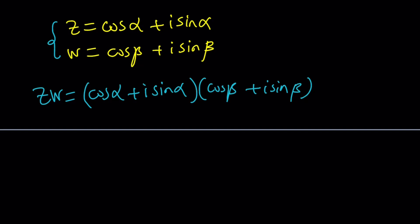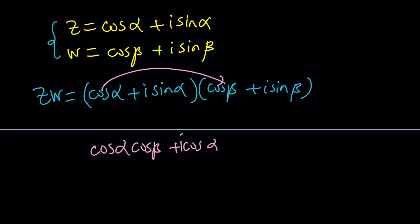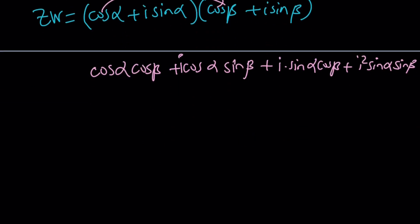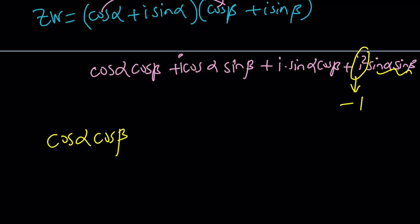So how do you multiply these two complex numbers? You just distribute and simplify. You get cosine alpha cosine beta, then I times cosine alpha sine beta, then I times sine alpha cosine beta, and finally I squared times sine alpha sine beta. And what do you think I squared is? Hopefully you know that — it's negative one, because that's the most important part of complex numbers.